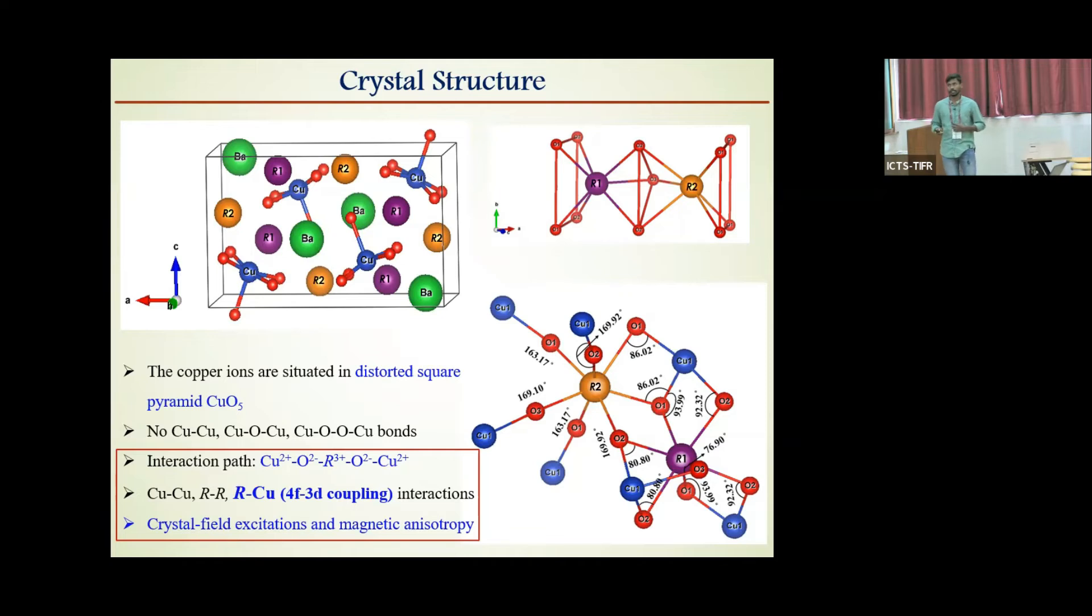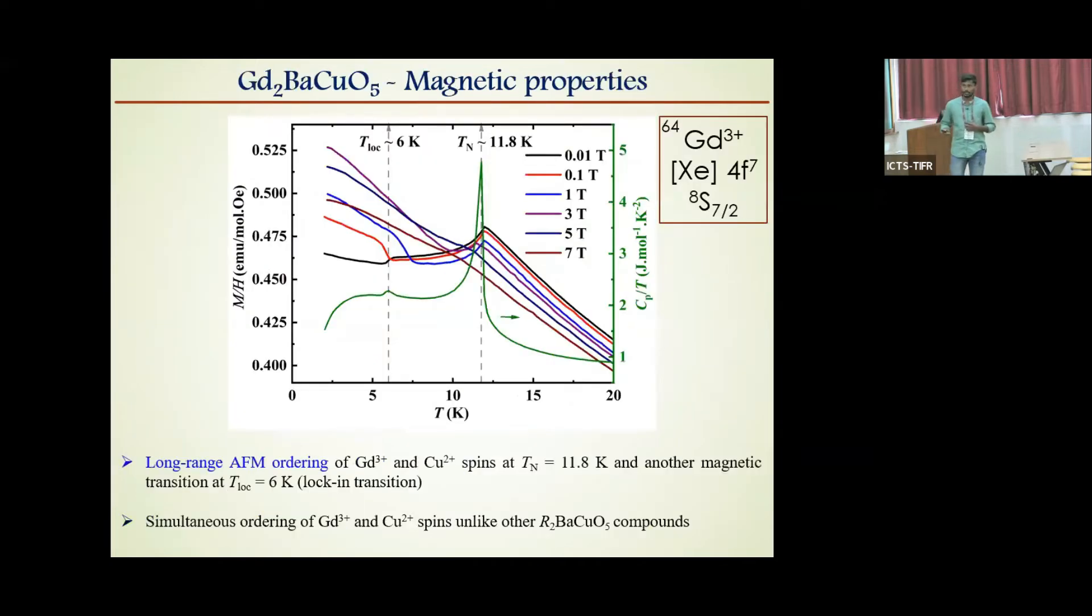Today I'm going to discuss only Gd2BaCuO5 results. As confirmed by magnetism, magnetic and heat-capacity measurements, these compounds exhibit two magnetic transitions. One is at 11.8 Kelvin, which is long-range anti-ferromagnetic ordering of gadolinium and copper spins. Another transition is at 6 Kelvin, which is lock-in transition. Why is it so? I will be telling in my later slides. And unlike other compounds from this family where they exhibit individual transition for rare earth or copper spins, these compounds exhibit simultaneous ordering of gadolinium and copper spins at TN 11.8 Kelvin.